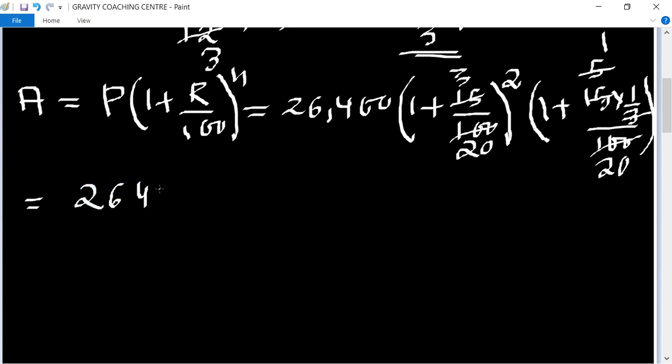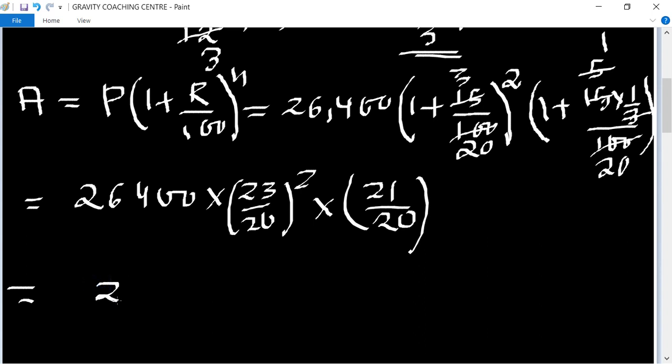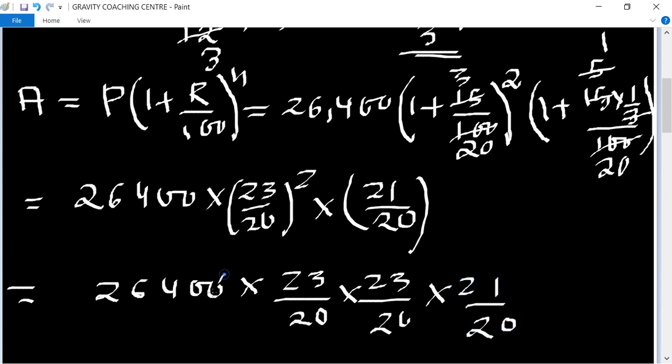Equal to 26,400 multiply twenty-three upon twenty whole square into twenty-one upon twenty. Equal to 26,400 multiply twenty-three upon twenty multiply twenty-three upon twenty and twenty-one upon twenty.